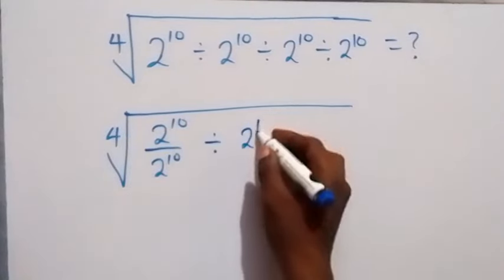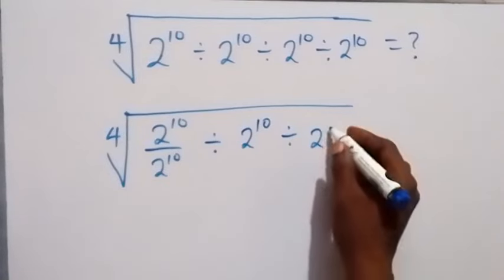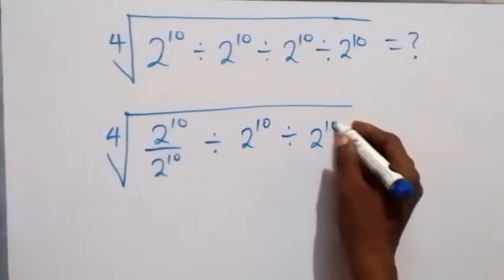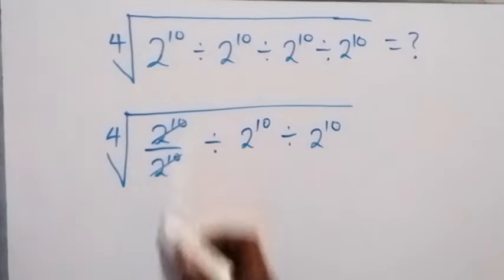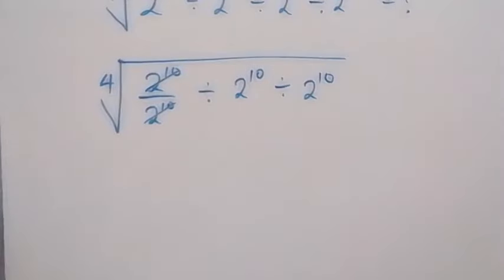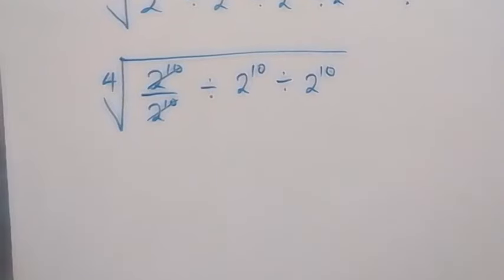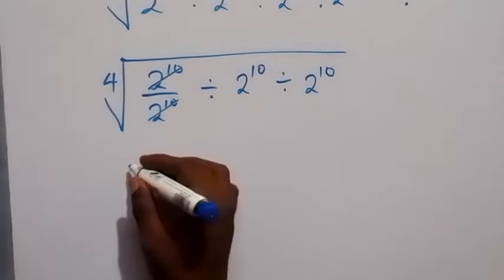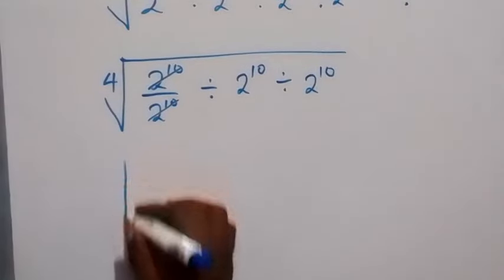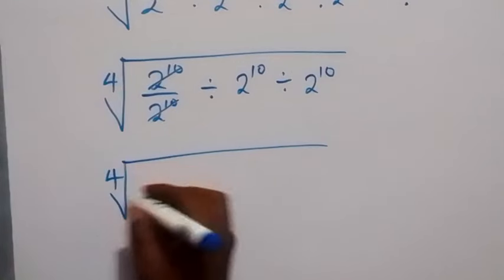From here, this first pair divides each other and that gives 1. So we can see that we have the fourth root of 1 divided by — so we have the fourth root of 1.